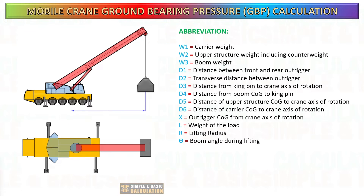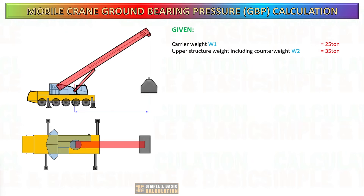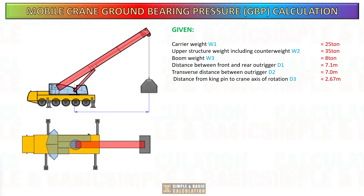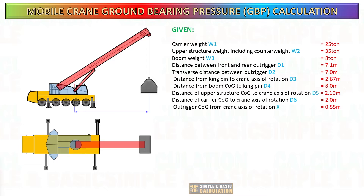Now let us define all the weights for each crane component and all the measurements. For illustration purposes, it is important to always consult the crane manufacturer for accurate data and measurements. The carrier weighs 25 tons, the upper structure weighs 35 tons, and the boom weighs 8 tons. The load to be raised has a weight of 10 tons and a lifting radius of 9 meters.